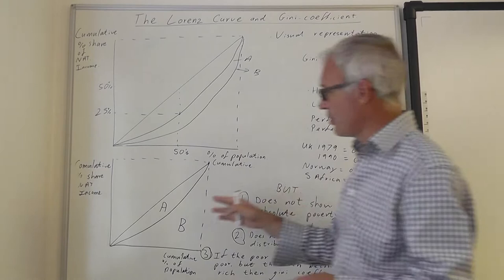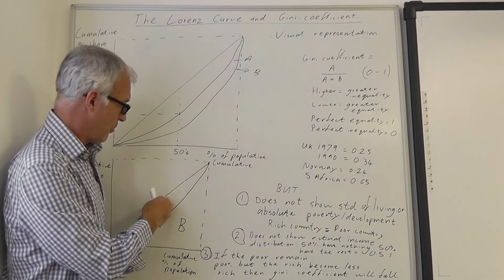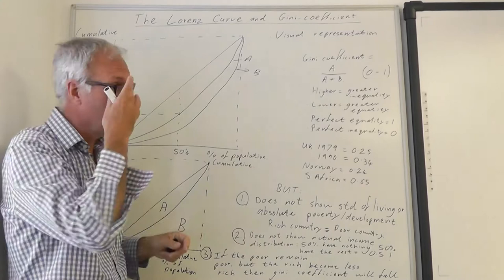If we were actually on the 45 degree line, then we'd have perfect equality. The area A would equal area A plus B, would be 1 divided by 1, which would give us the answer 1.